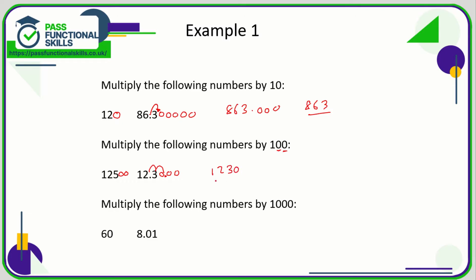Times by 1000, we are just going to add three zeros if it's a whole number. So 60 becomes 60,000. And if it's a decimal, we're going to move the decimal point three places: one, two, three. So the answer is going to be 8010. We can just leave that as eight thousand and ten.